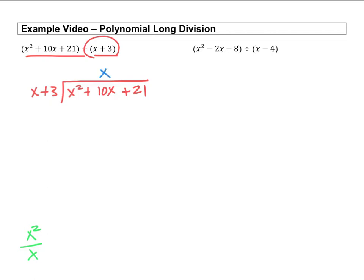So that's going to be x. Now we multiply x times x plus 3, so we're going to do x times x and then x times 3. That's going to give us our x times x is our x squared and our x times 3 is a positive 3x.